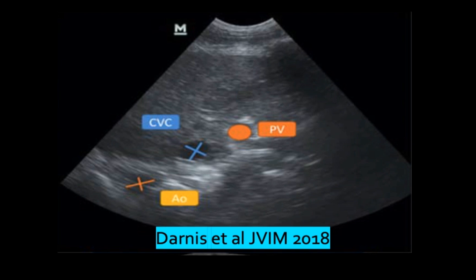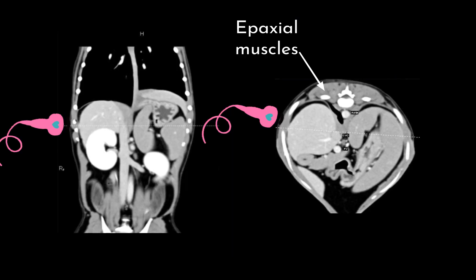Alternatively, the CVC crossing the diaphragm can be imaged in the parasternal view. To locate this view, the transducer is placed parallel to the ribs, transverse to the CVC and aorta at the 10th to 12th right intercostal space, approximately just below the epaxial muscles in the upper third of the thorax.